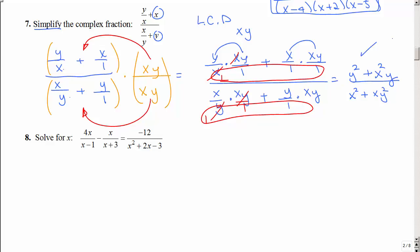I can leave my answer like that, or I could say, hey, I could factor out what do I have in common in the top, a y, what do I have common in the bottom, an x. But I can't reduce either of those, so again, this would be an okay answer. This would be an okay answer.